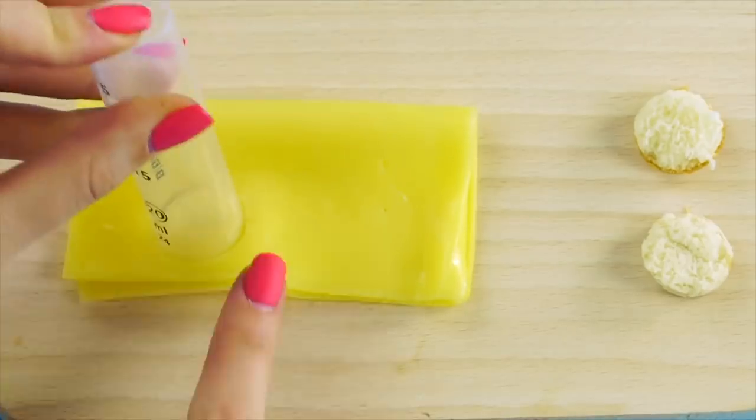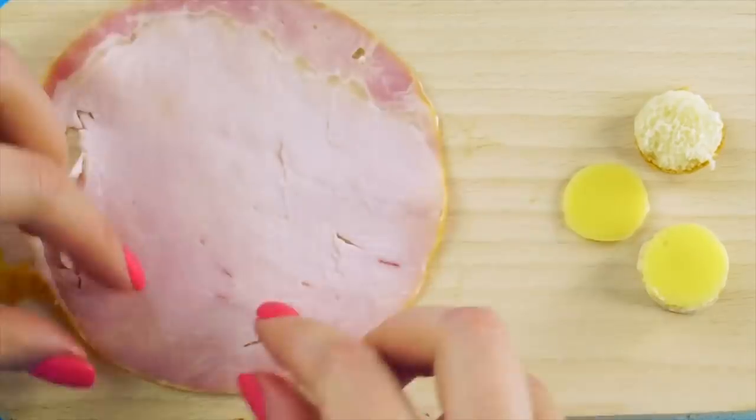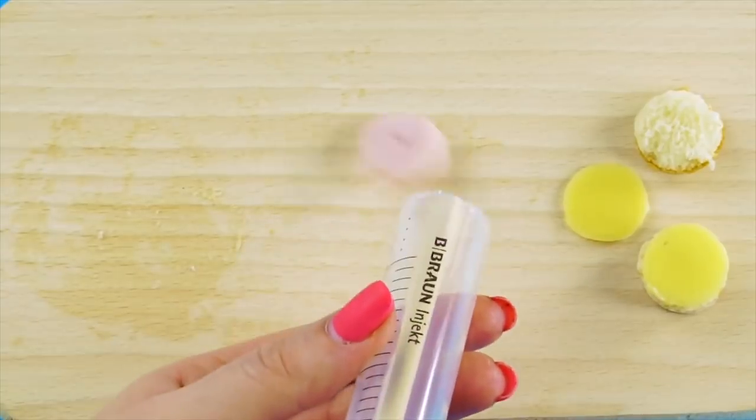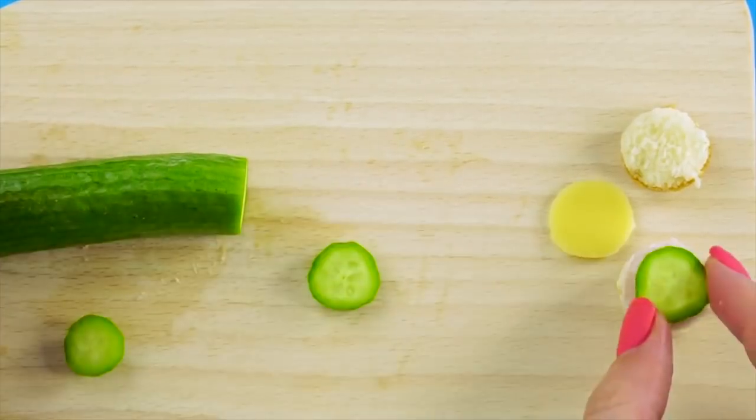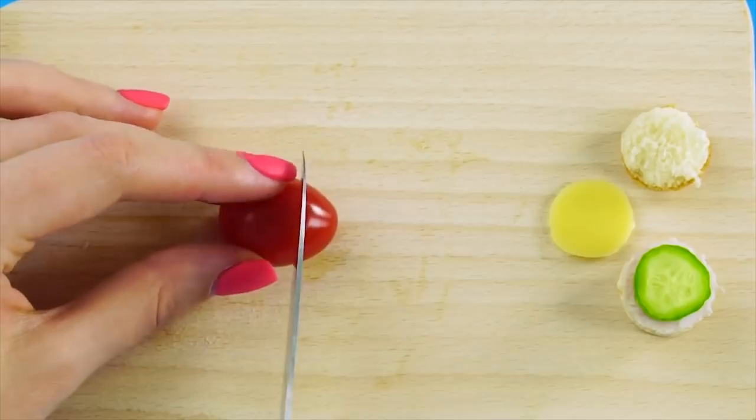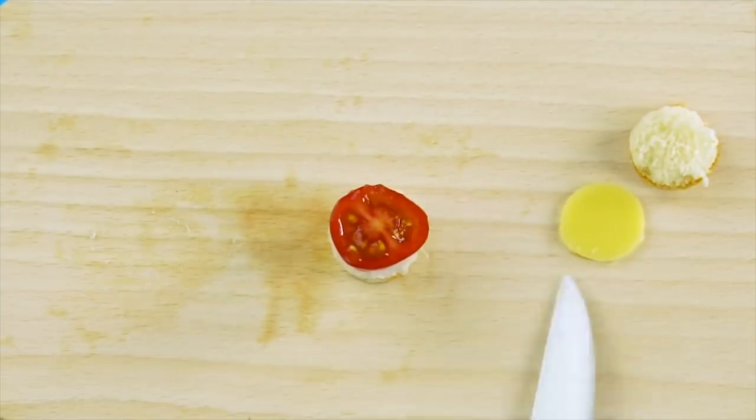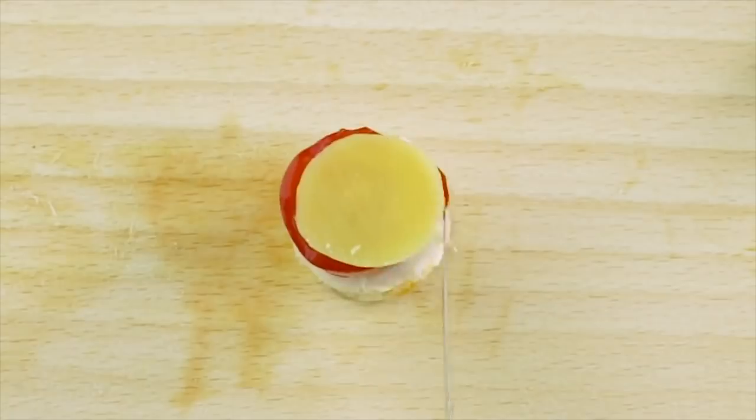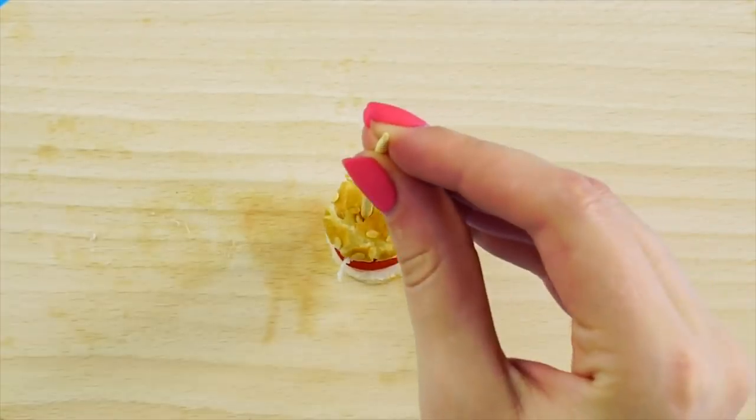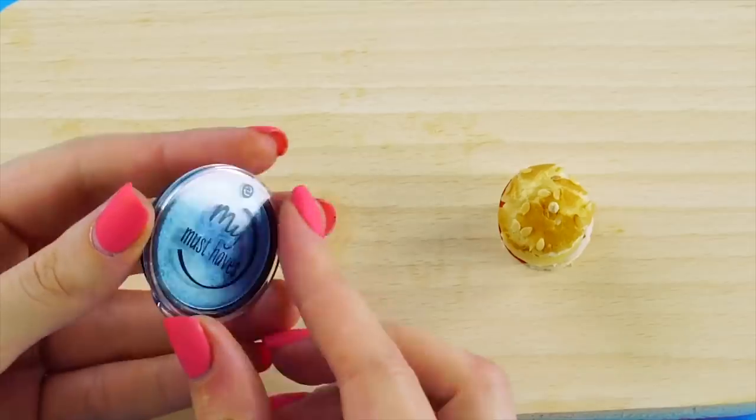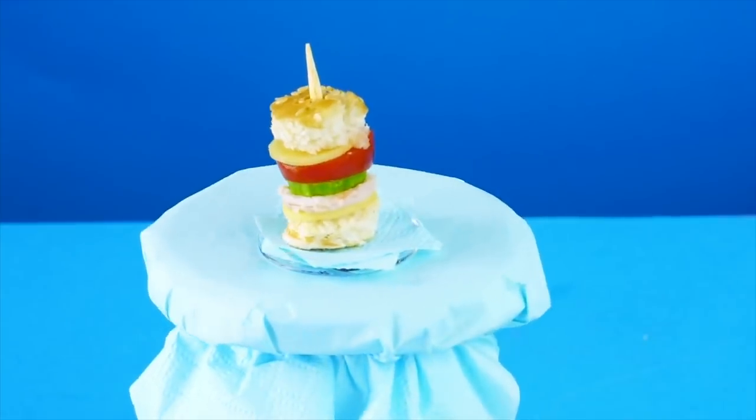Now use your cutter to make some cheese slices. Next, make the patty. Cut out a piece of lunch meat. Slice a small cucumber and a cherry tomato. Top it off with the other piece of cheese and the bun. Use a toothpick to hold it all together. Use the makeup lid as a plate and cut out some tiny napkins. That is one impressive burger.